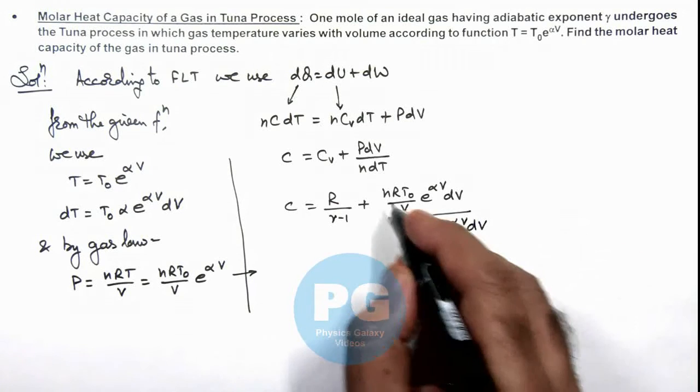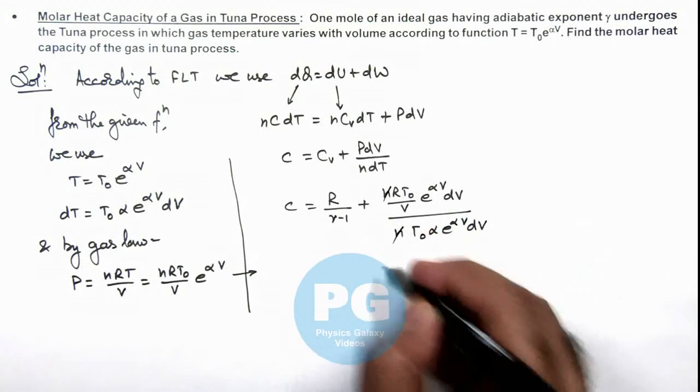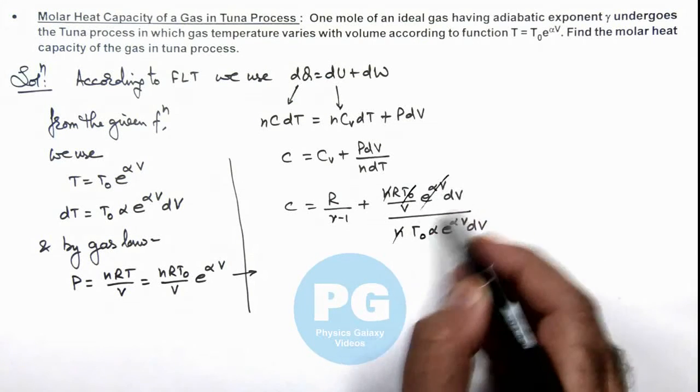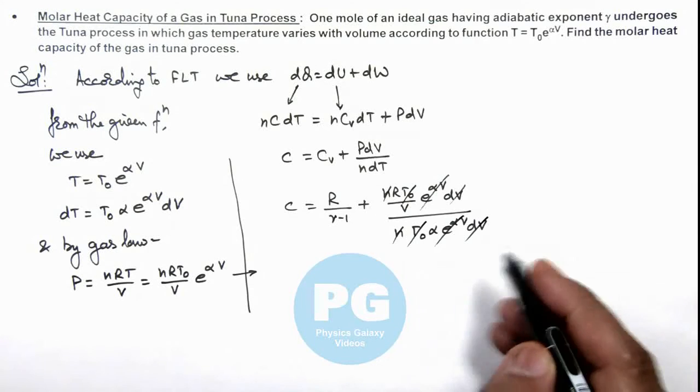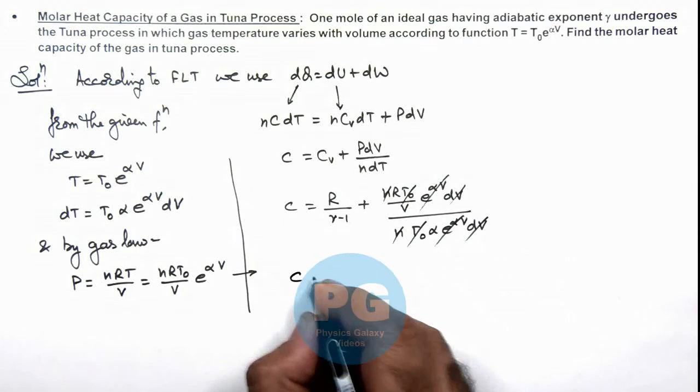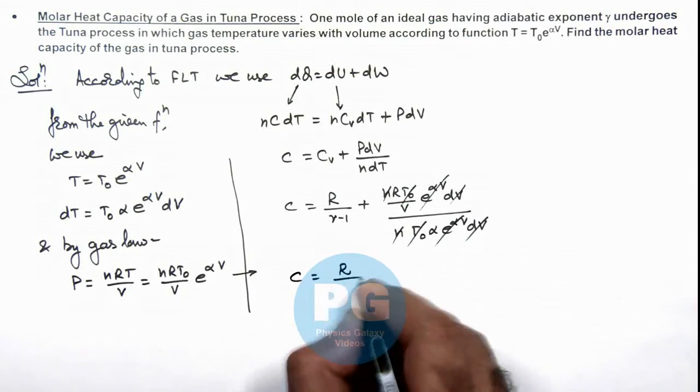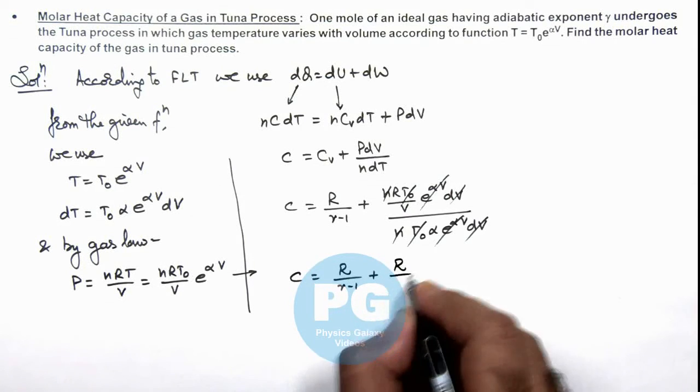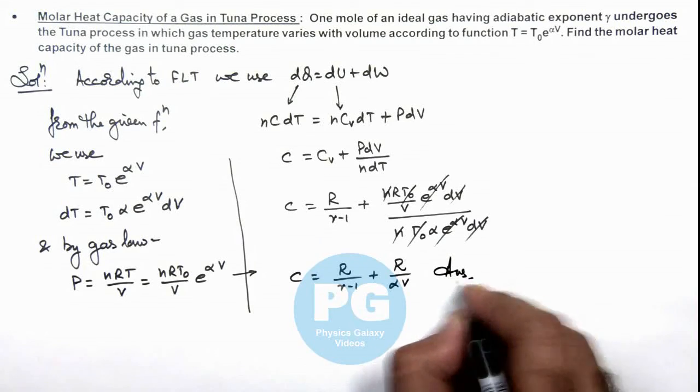Here you can see the value of n gets cancelled out, and rest of the parameters also—T₀·e^(αV)·dV—these also get cancelled out. So the value of C we are getting finally is R/(γ-1) + R/α. This is the final result of this problem.